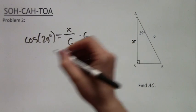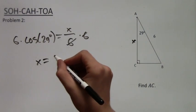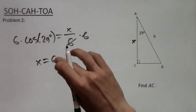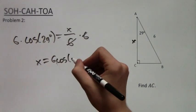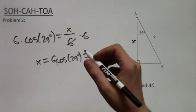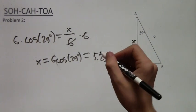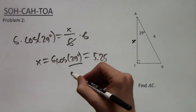So now I just got to solve for X. We multiply by 6 on both sides, and we get X equals 6 cosine of 29 degrees. So this is just something we plug into our calculator, cosine of 29 degrees times 6, and we will get 5.25. So X equals 5.25.